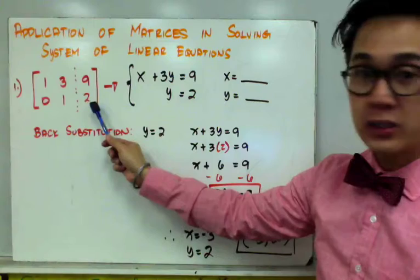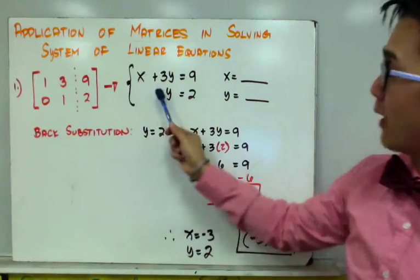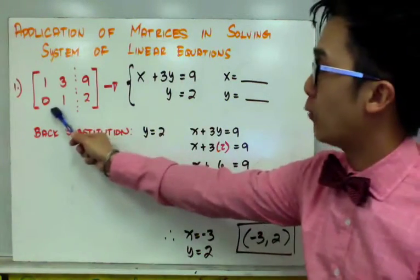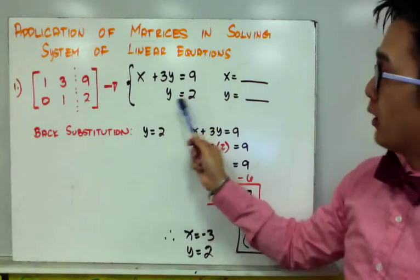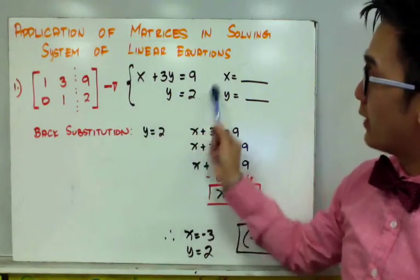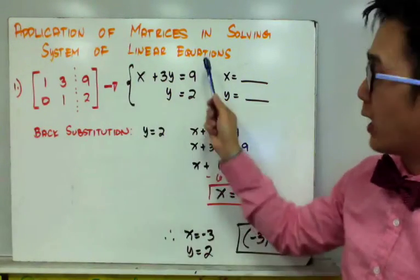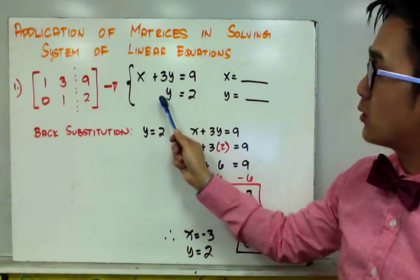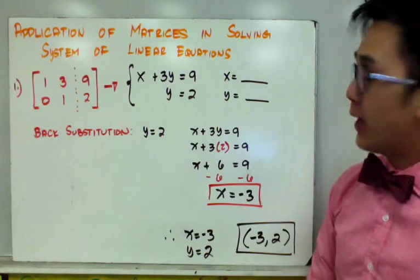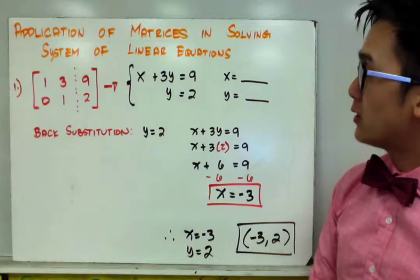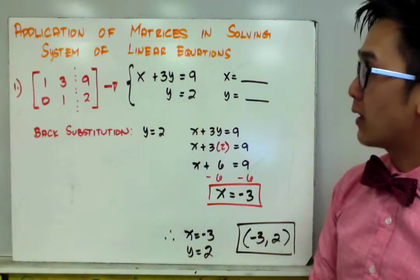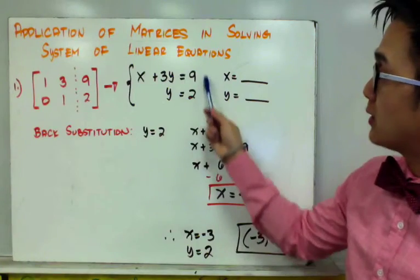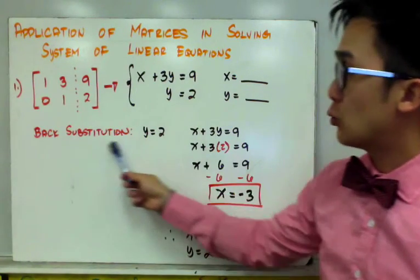Converting this to our linear system would look like x plus 3y is equal to 9, and y is equal to 2. We know that two lines, when changed into slope-intercept form, will create a point of intersection, and we're going to find that point of intersection using back substitution.